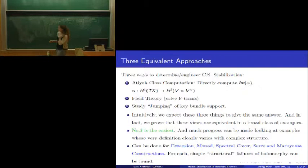So, there are three approaches that you might want to use to try and determine and engineer complex structure stabilization in the presence of a holomorphic vector bundle. The most straightforward, in some sense, conceptually is to directly compute the Atiyah class, compute this image of this map α as I've defined it, and decide, given some bundle, how many things can be stabilized. The problem with this is that it is generally pretty computationally hard. Likewise, the field theory involves solving F terms, which are very moduli-dependent and frequently also difficult to determine.